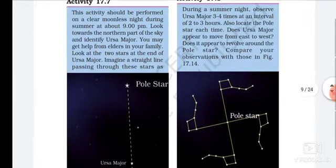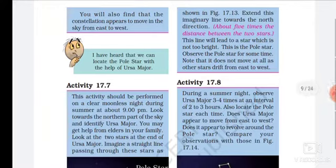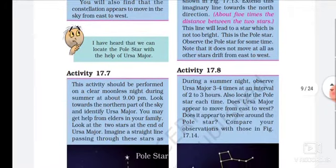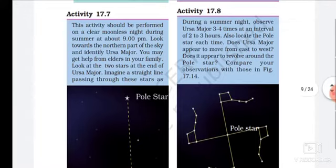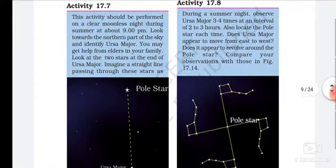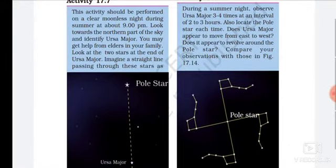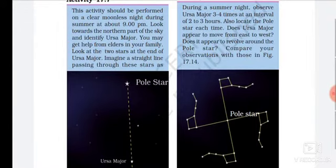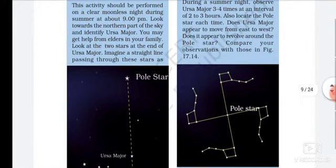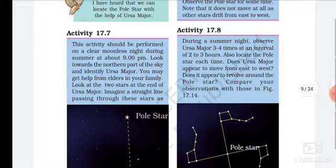Also look at the Pole Star. Each time, observe for 2 to 3 hours. Does Ursa Major appear to move from east to west? Does it appear to revolve around the Pole Star? Compare your observations with those in Figure 17.14. यानि Activity 17.8 इसके अंदर क्या है.